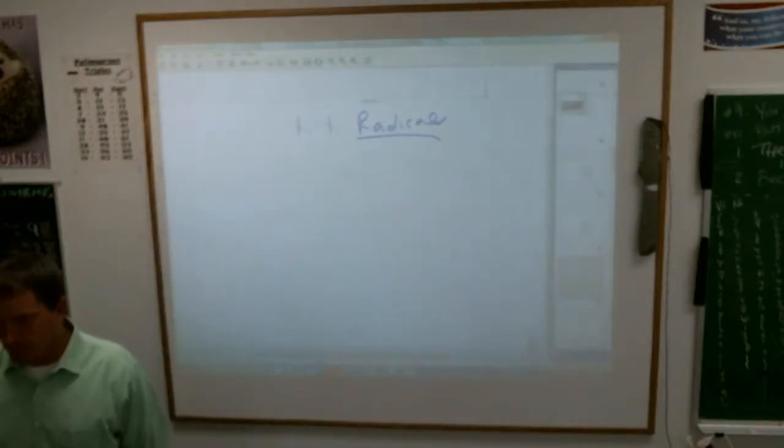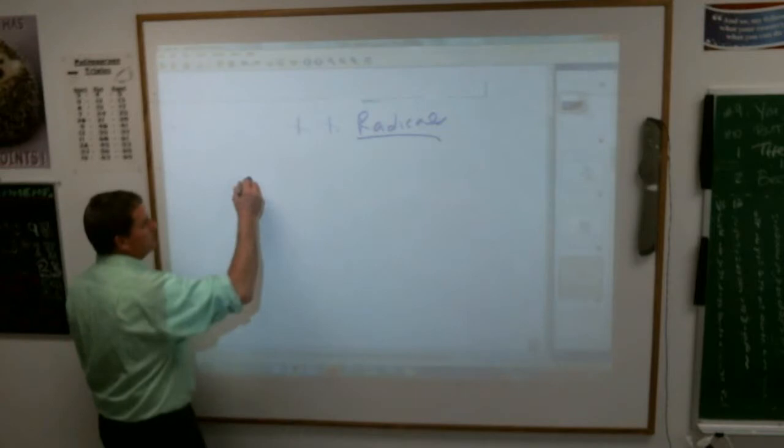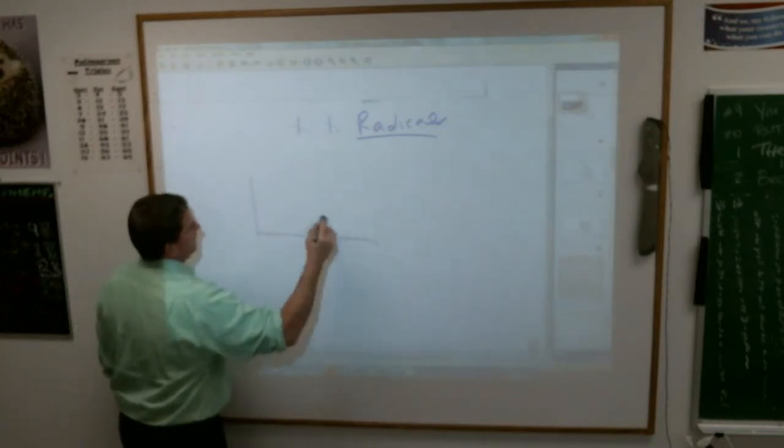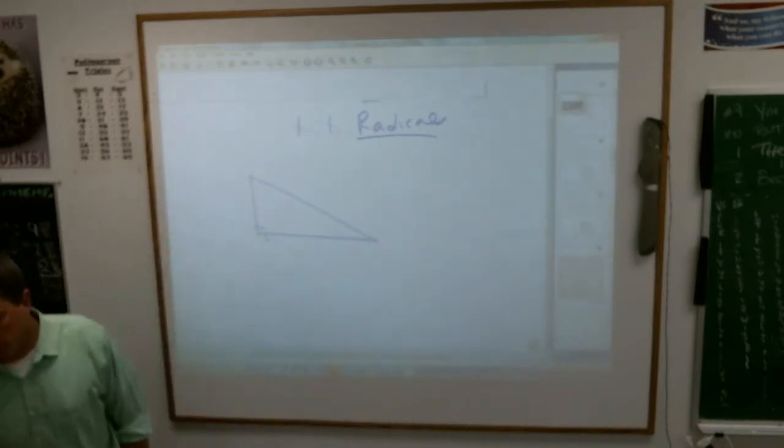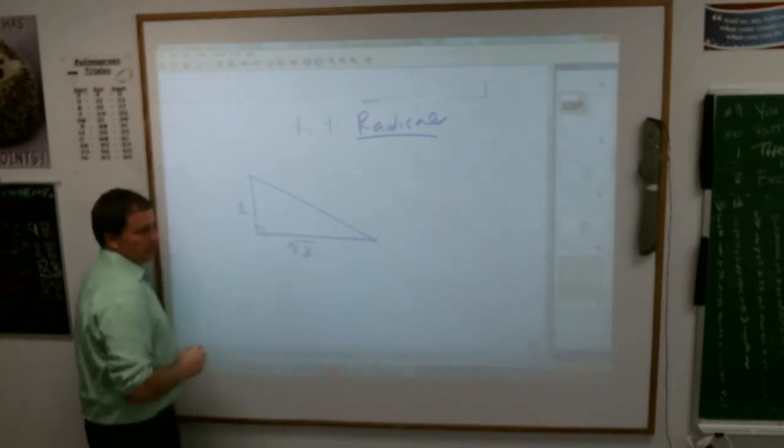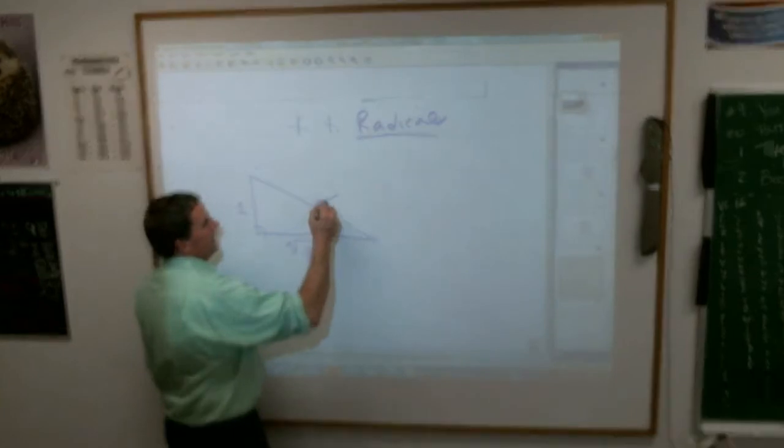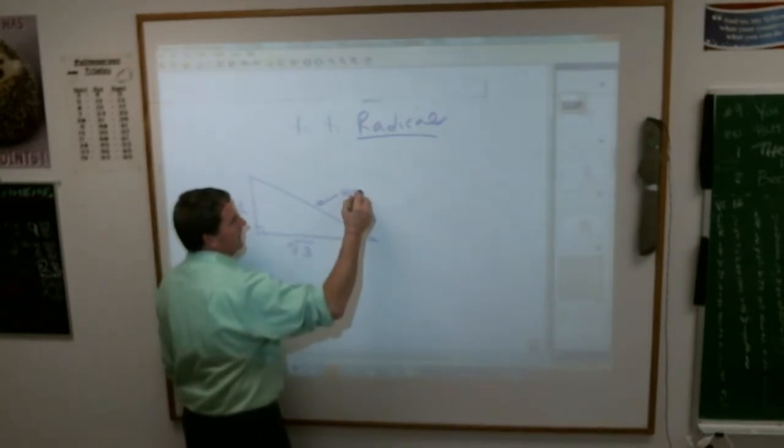A couple days before we talked about radicals, you can deal with them the right way. We are going to look at them again, a little bit more to make sure you understand the gist here. Write down this problem. You've got a right triangle, and the measurements are 1 and the square root of 3. It asks you to give the length of the hypotenuse.